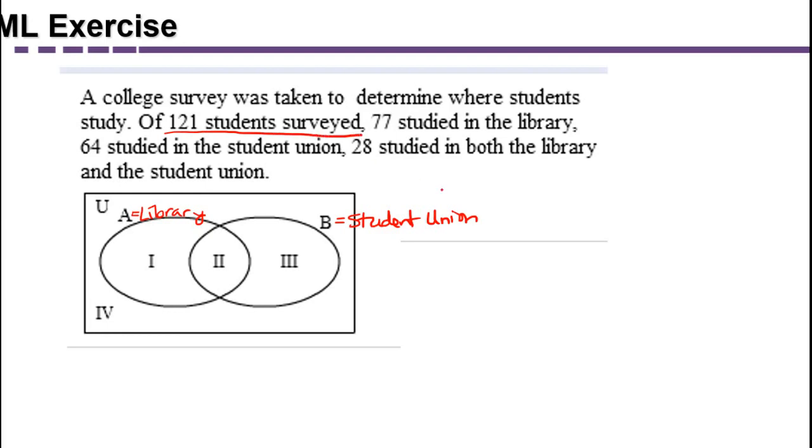When it says 121 students surveyed, that's telling you the total number of students. So that's the number in the universal set U, which they're referring to. So that's 121.